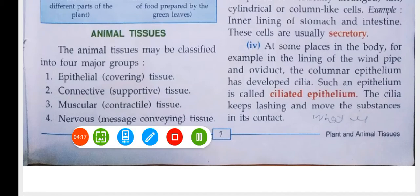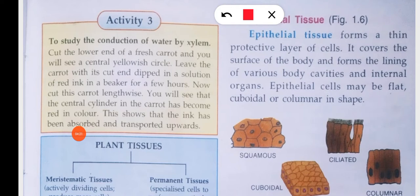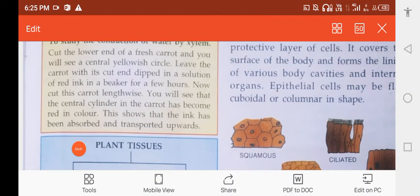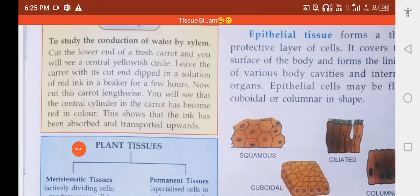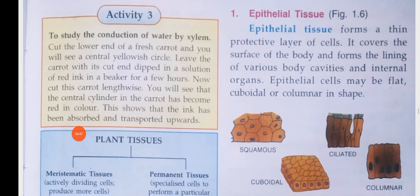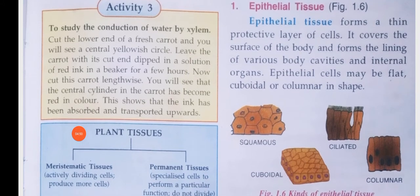We will study epithelial tissues first. Epithelial tissues form a thin protective layer of cells. They cover the surface of the body and form the lining of various body cavities and internal organs. Epithelial cells may be flat, cuboidal, or columnar in shape.